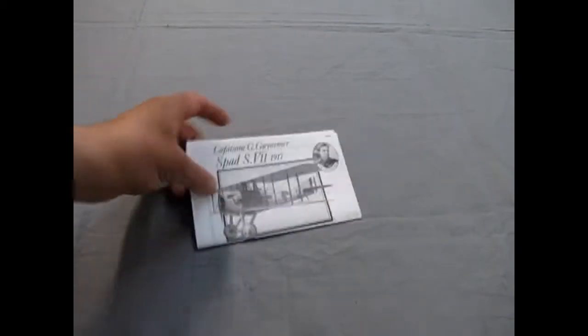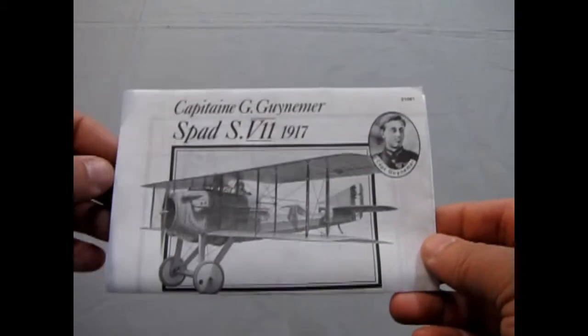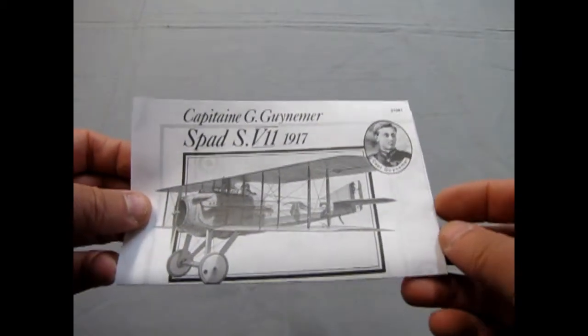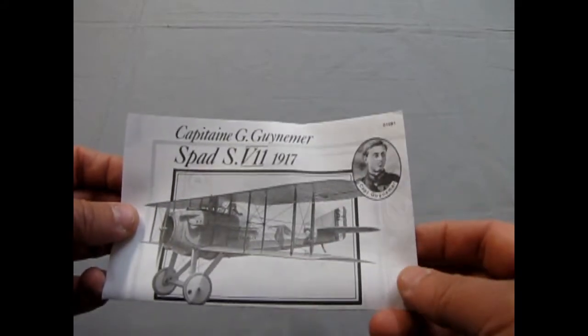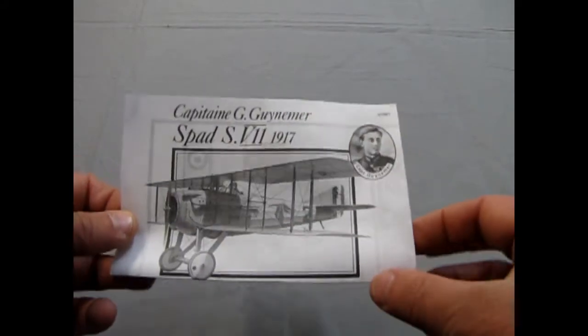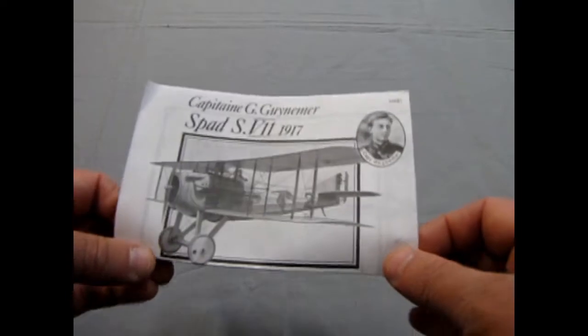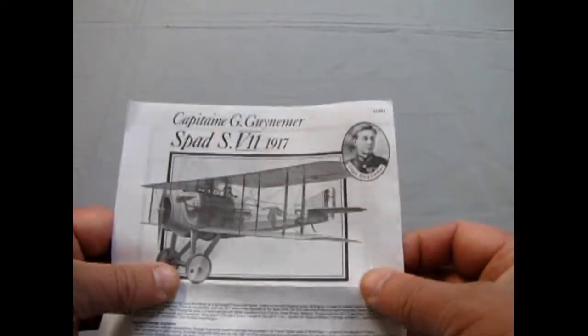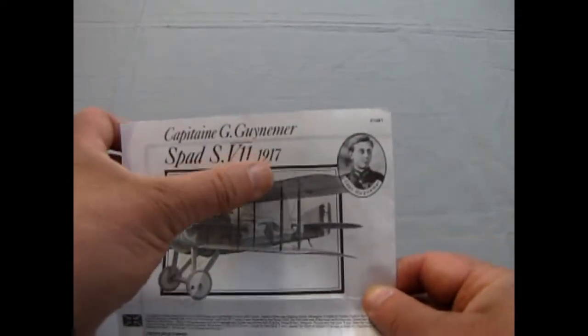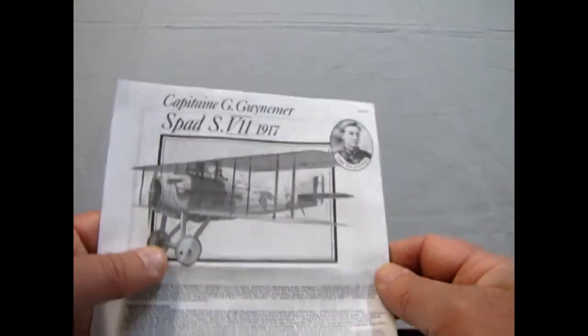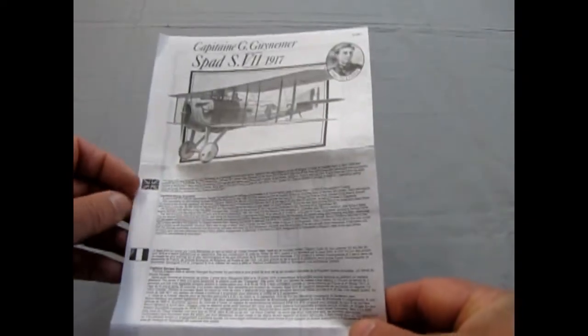So, I'm going to change up things a little and start with our instruction sheet. Now this one, again, is Captain G Gugnamir. And he was a famous ace known as the Old One, Vieux Charles. So, this is saying 1917, but the SPAD actually came out toward the end of 1916.